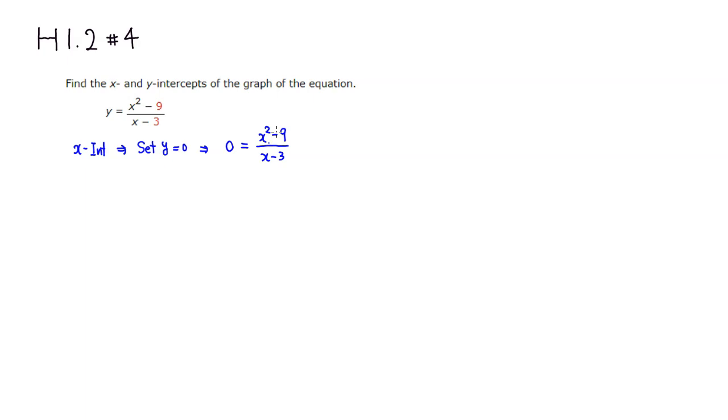Then in order to make this whole fraction equal to 0, we just need to make sure that the numerator is 0. Or another way to think of it is to multiply both sides by the denominator. Then we have to make sure that the numerator, x squared minus 9, has to be 0.